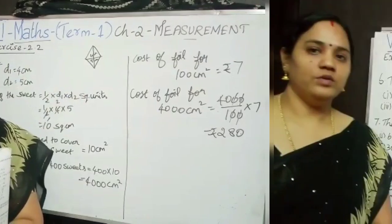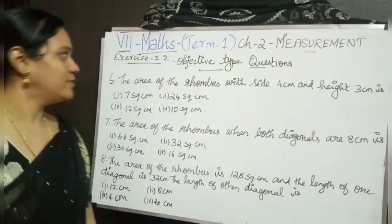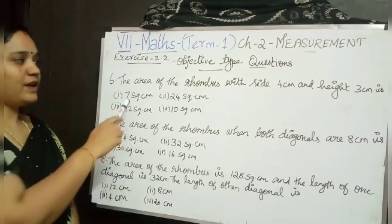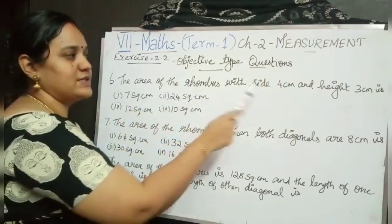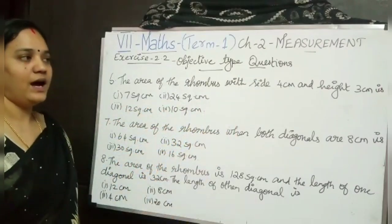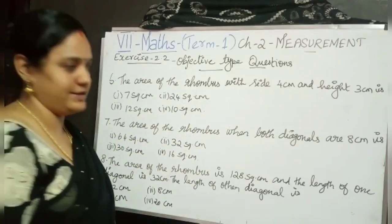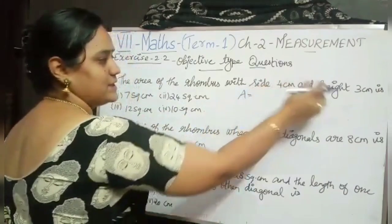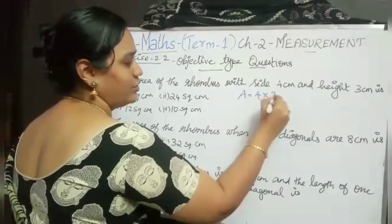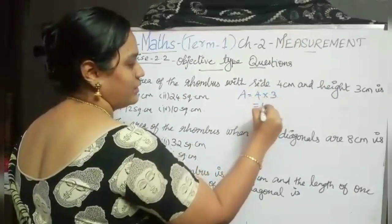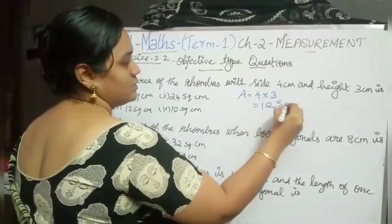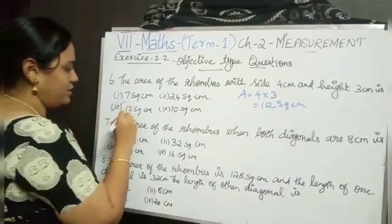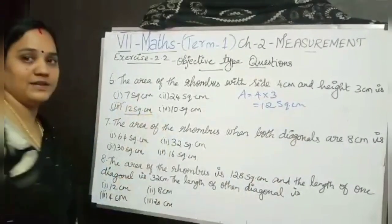Now the objective type questions. Sixth problem: the area of a rhombus with side 4 centimetre and height 3 centimetre is? Area formula is base into height, so 4 into 3 equals 12 square centimetre. Option 3 is our answer.